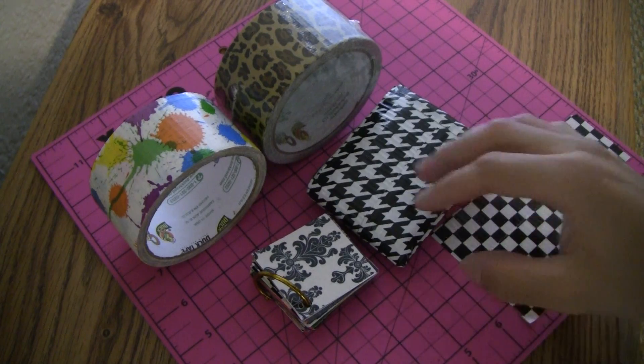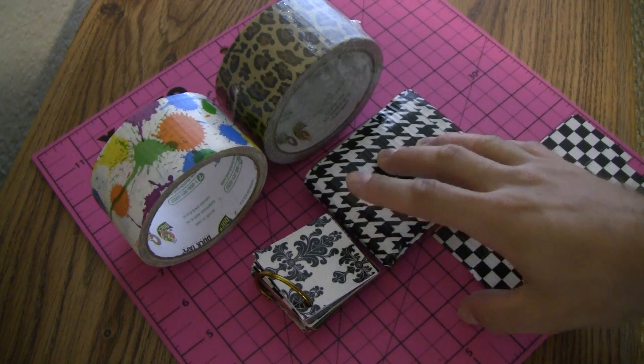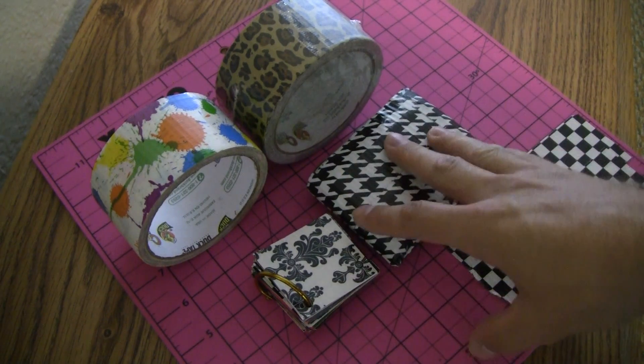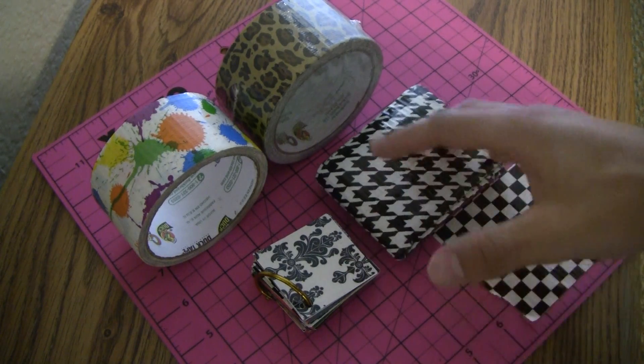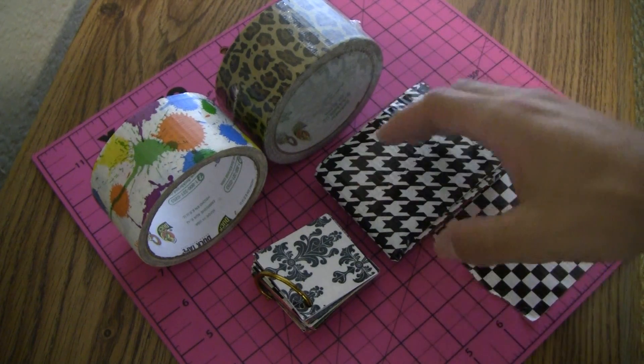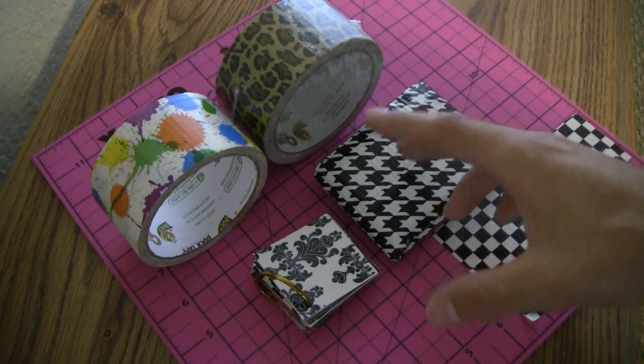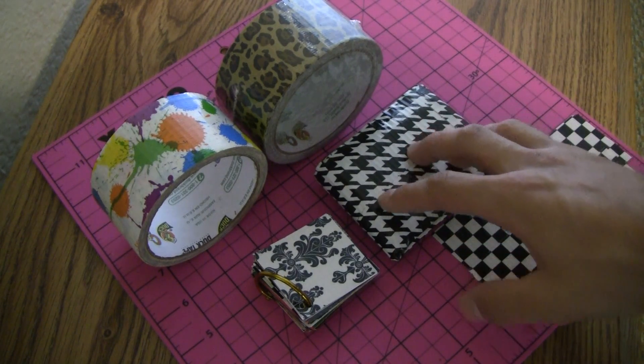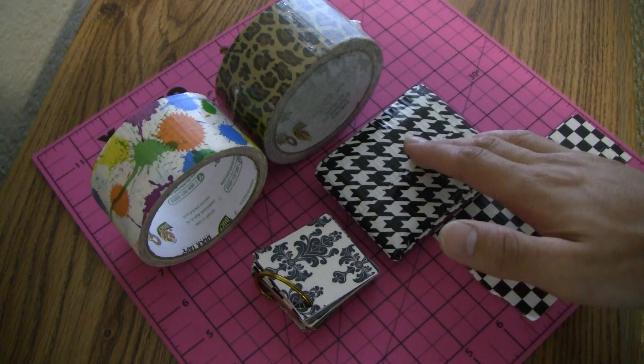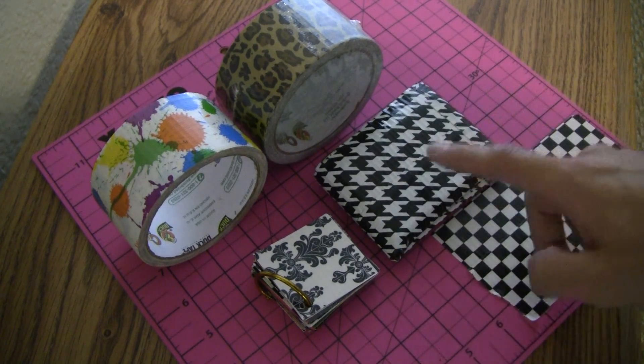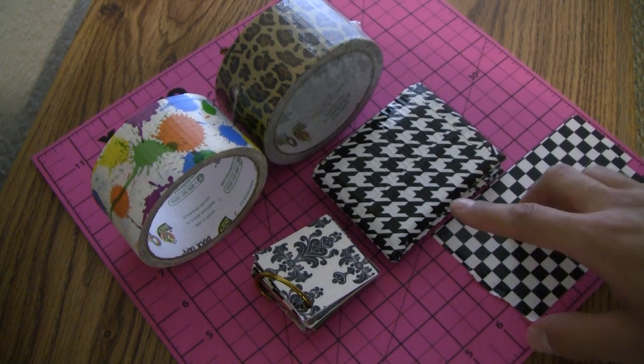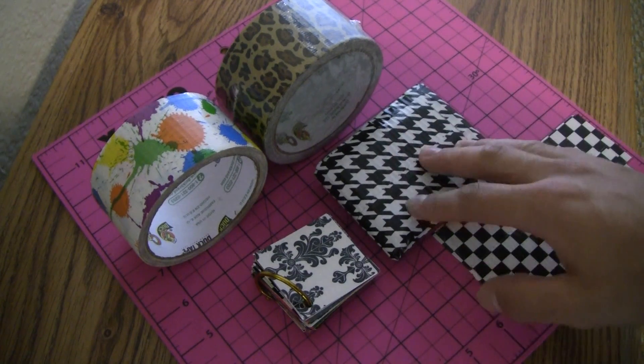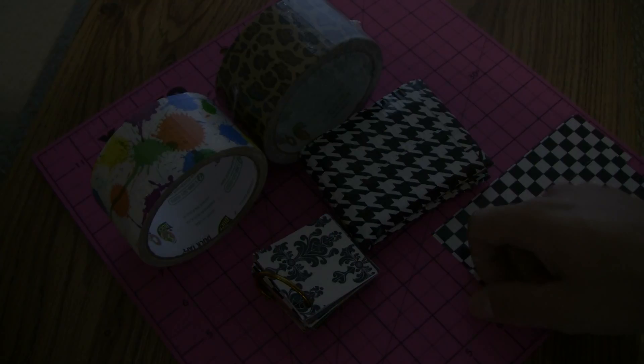So that about does it for this tutorial on how to line up your duct tape. Now this is by no means a comprehensive guide to lining up every single design because obviously it will take a while to show you every single one. But pretty much just use this video as a guide, just mess around with your different patterns until you get one that works. Some of them are a little trickier than others, some of them like the houndstooth and the checker here are extremely simple, shouldn't have too many problems with that and you should be pretty good. So hopefully you enjoyed this tutorial.